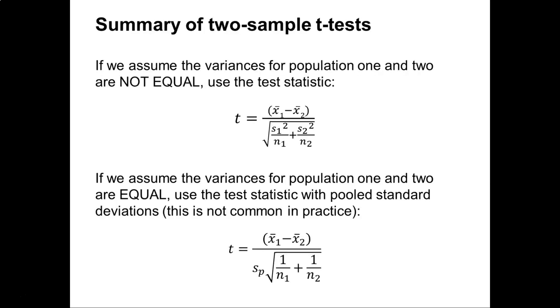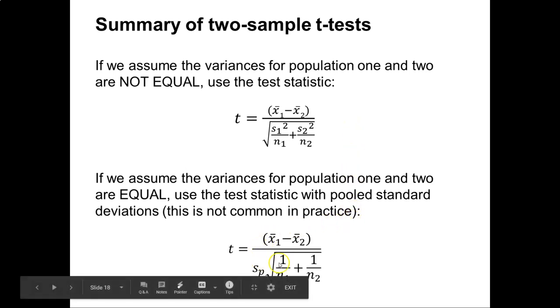So to summarize both of the two sample t-test approaches, if we assume the variances for population one and two are not equal, we can use this test statistic. If we assume the variances for population one and two are equal, we can pool the standard deviations and look at the test statistic that you see below.